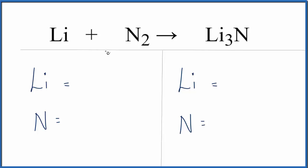Let's count the atoms up on both sides. We have one lithium and two nitrogens on the reactant side. Over on the product side, we have three lithiums and one nitrogen.